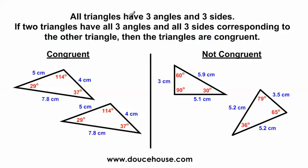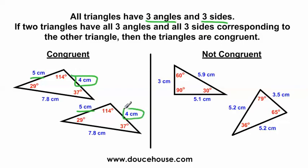Moving on — all triangles have three angles and three sides. No matter what, every triangle is always going to have three angles and three sides. If two triangles have all three angles and all three sides corresponding to the other triangle, then the triangles are congruent. In other words, if all three angles and all three sides have a matching angle and matching side on the other triangle, and all six of these angles and sides have a matching pair, then those two triangles are congruent. For example: 5 cm and 5 cm, 4 cm and 4 cm, 7.8 cm and 7.8 cm — these sides all have a matching corresponding side, so all three sides have a set of matching corresponding sides.